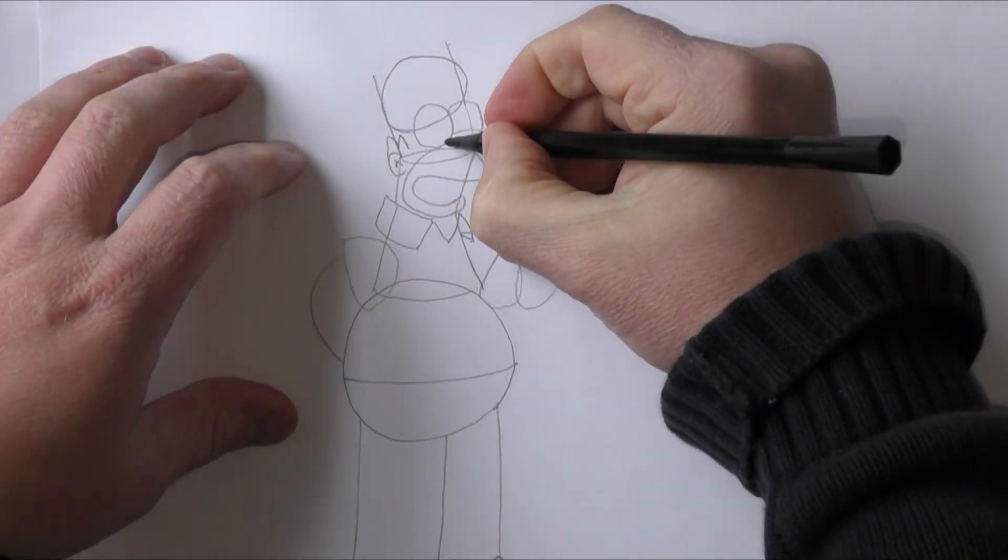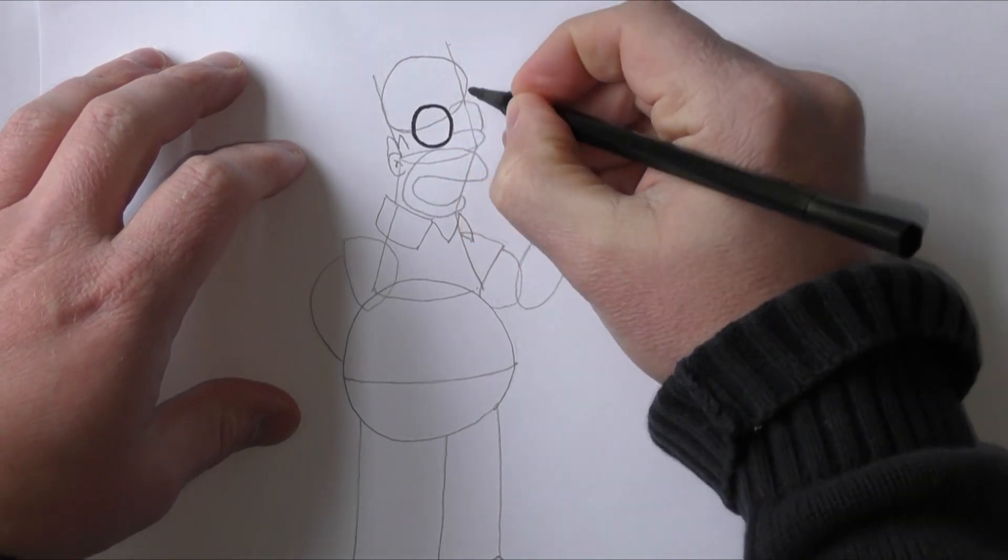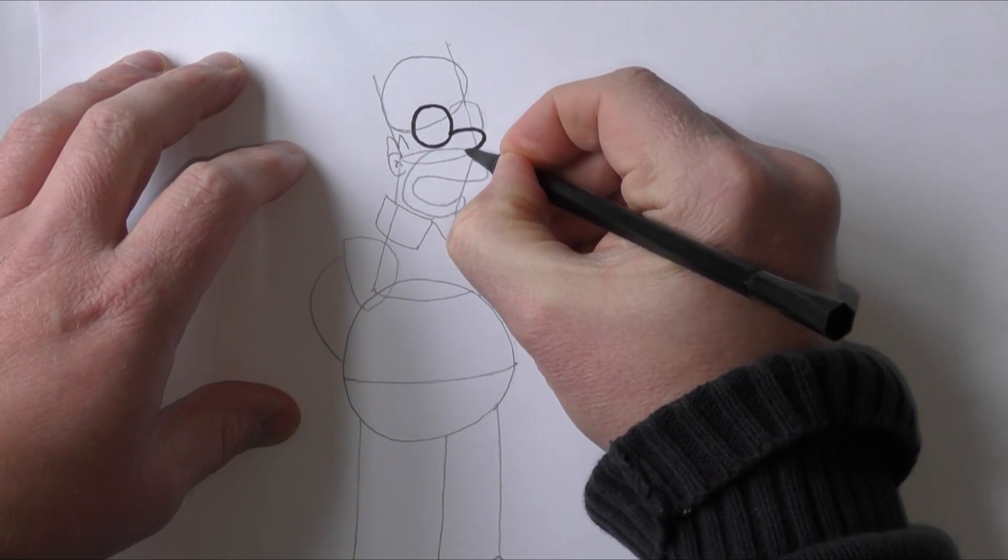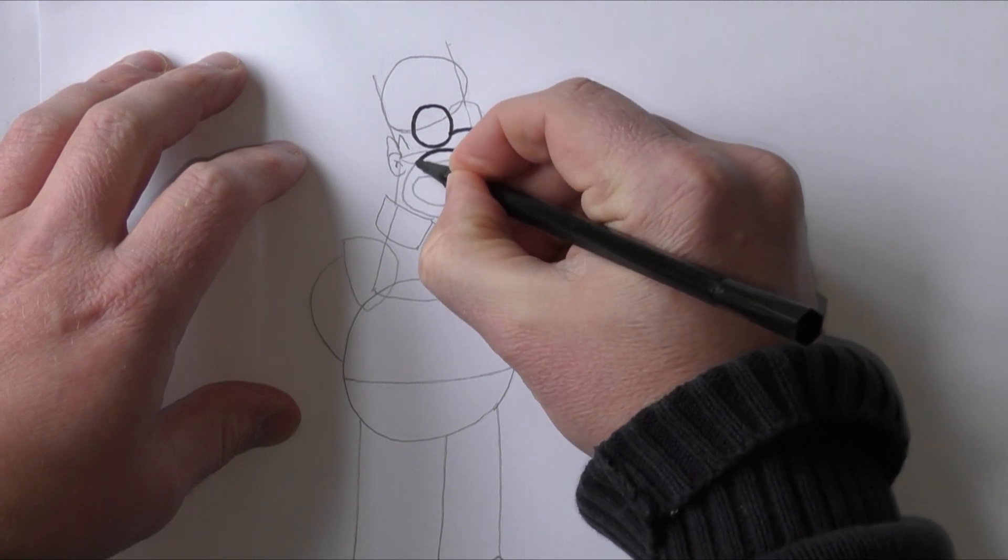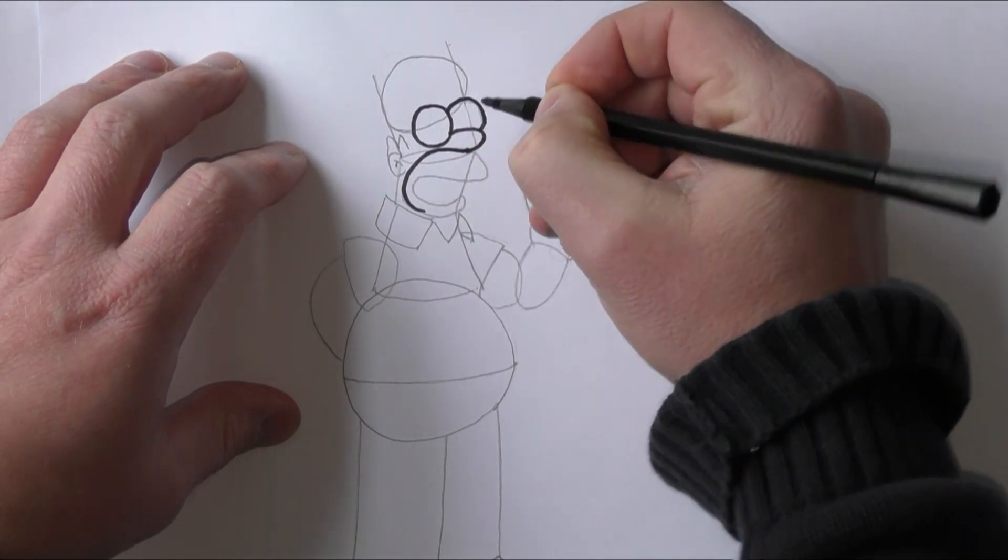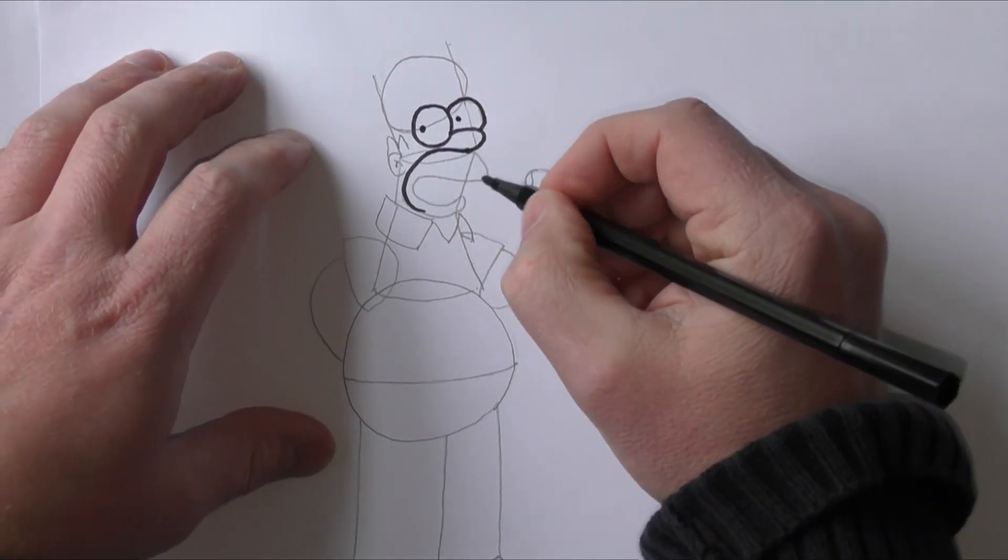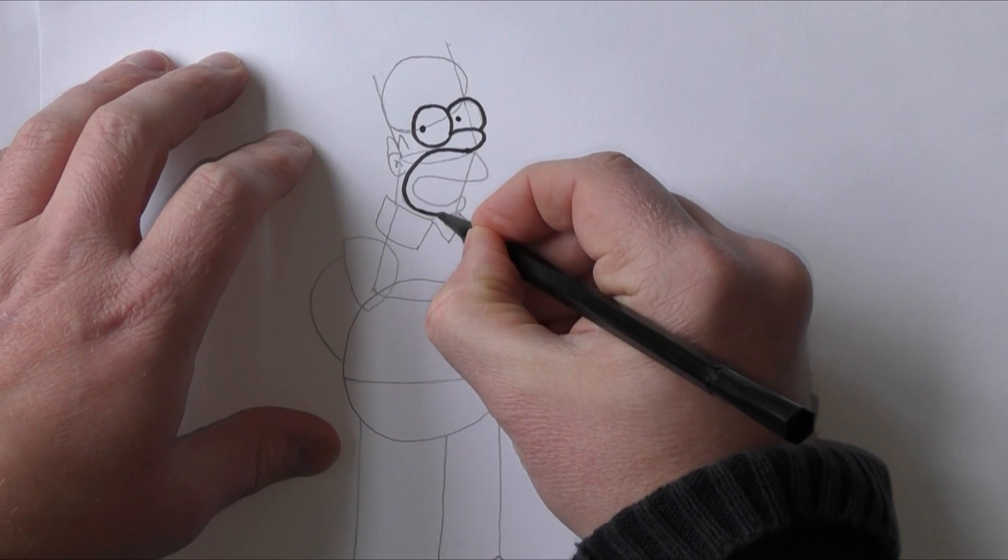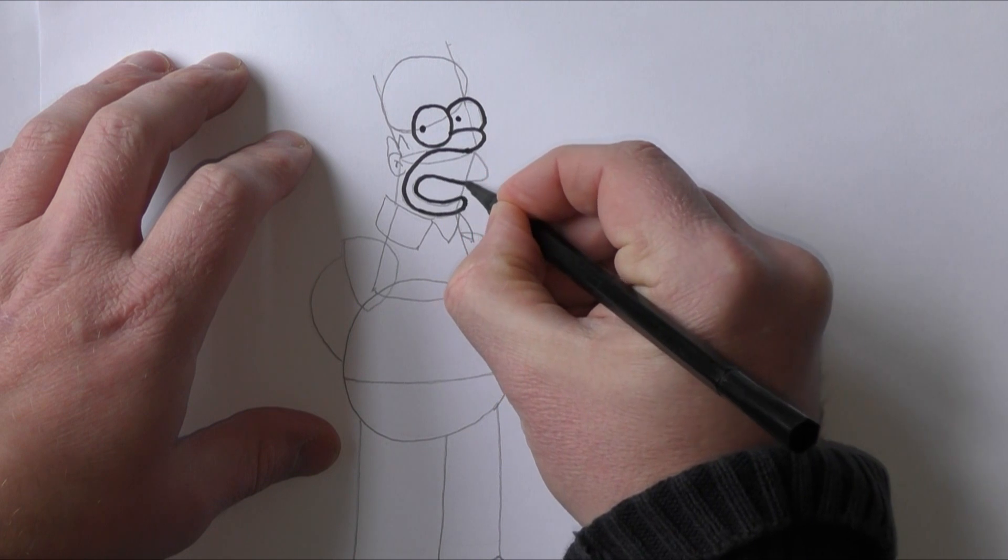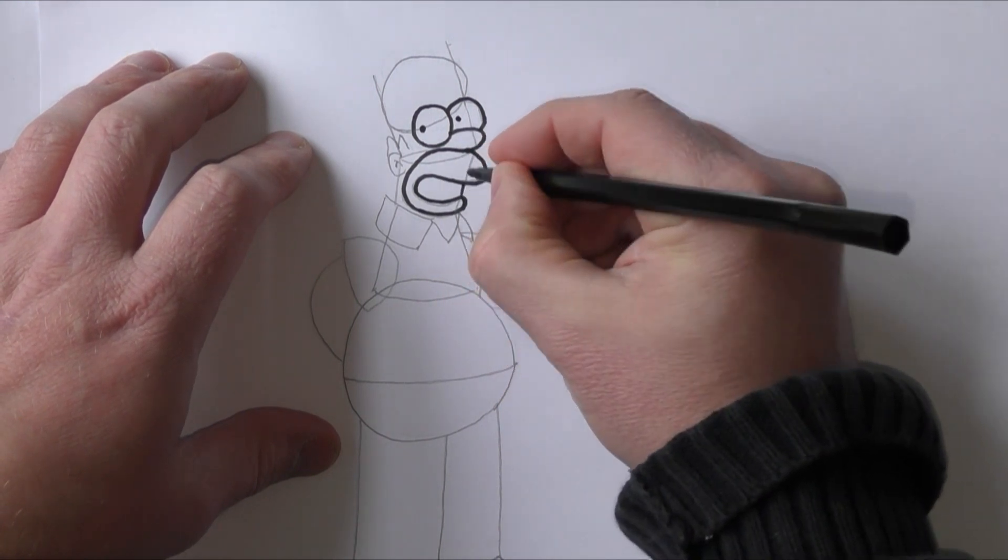Okay, so now we'll start to get the darker pen out and we'll start to go over it. So firstly his eyes and his nose, get those sorted out first, and start some of his mouth, a big curvy line there, back around his other eye. And we'll give him some pupils so you can really start to see now he's taking some shape. And let's finish his mouth off.